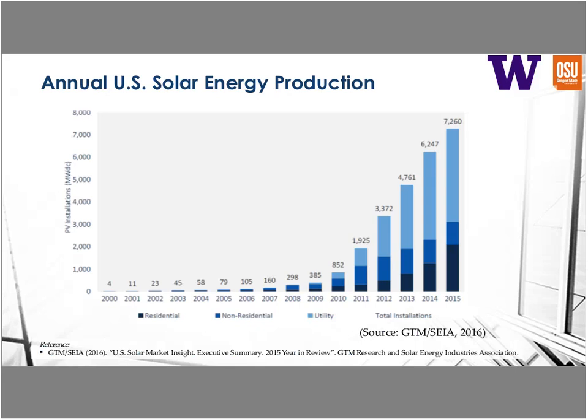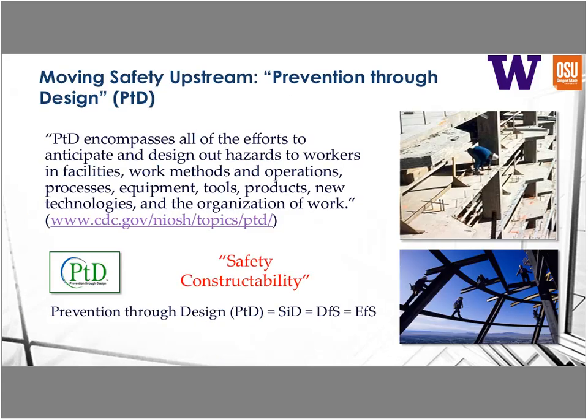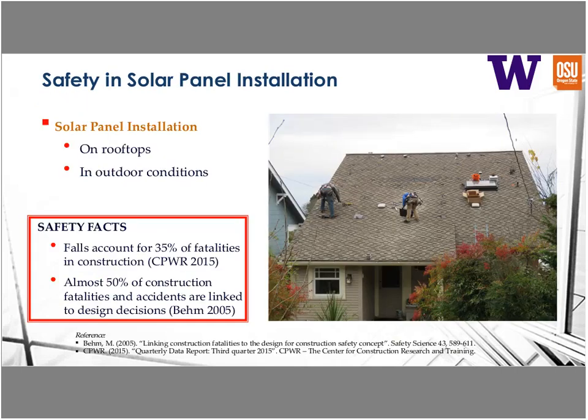Why do we care about solar safety? The U.S. industry has seen a dramatic increase in the number of solar panels installed in the last 10 years. This exponential increase has been driven mainly by three sectors: residential, commercial, and utility. We specifically focus on the residential sector because workers there are exposed to unique safety risks—they mostly work on small buildings with sloped roofs in outdoor conditions.